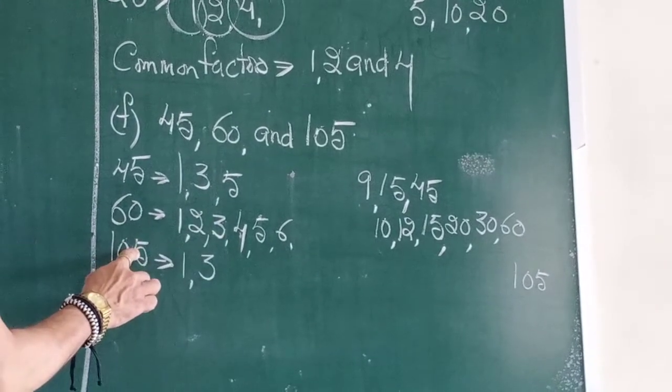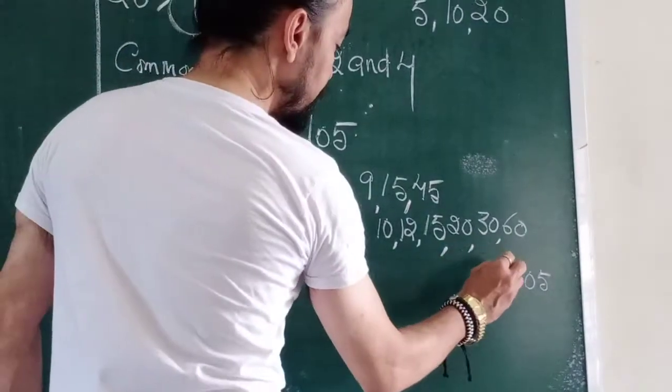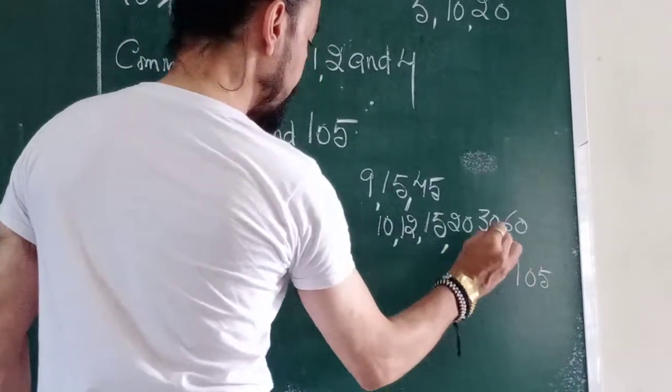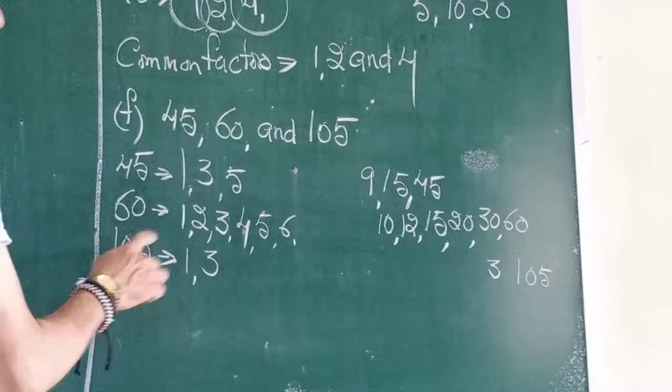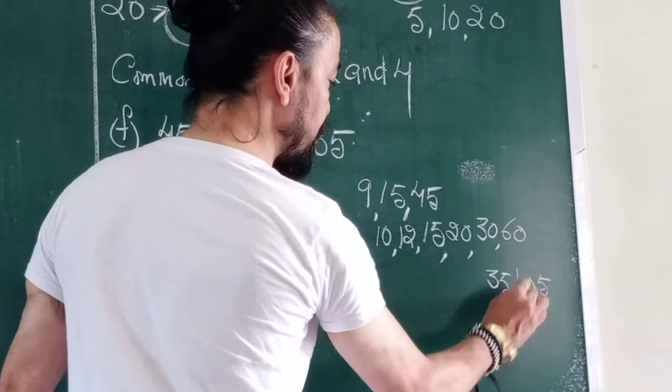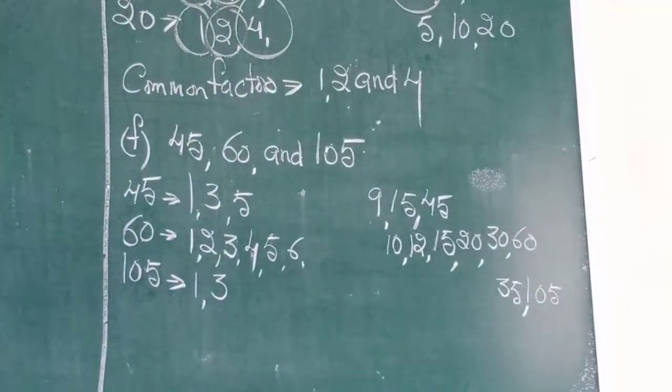3, 3s are 9. 3, 5s are 50. 3, 3s are 9. From 10, you will get 1. You do the 1 here. 3, 5s are 50. So, 35 is up. 3, 35s are 105.